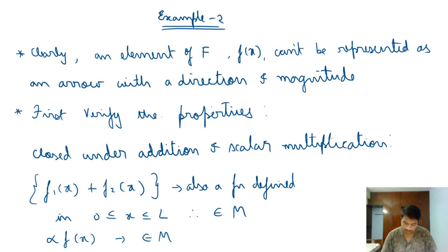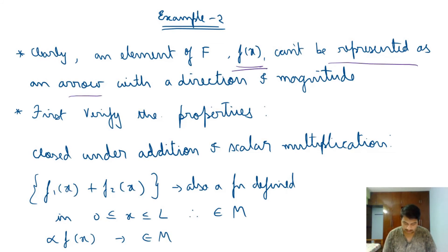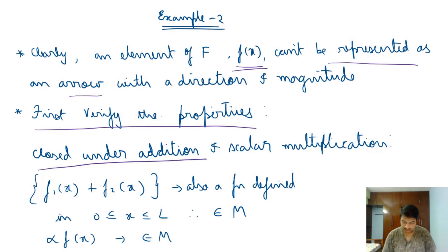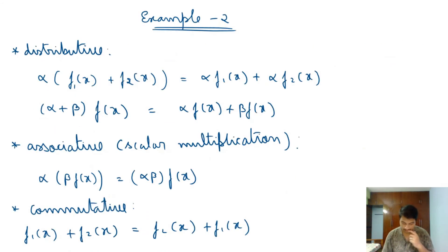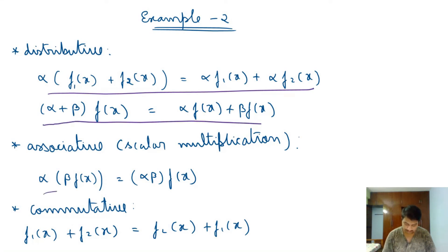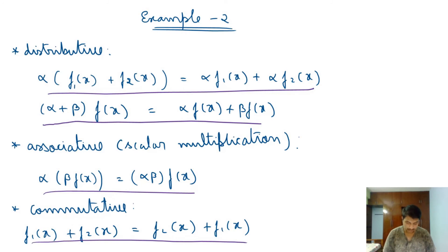Elements f(x) cannot be represented as arrows — it makes no sense to assign a direction and magnitude to a function. So this is another example where vectors are not arrows. Closure under addition and scalar multiplication: adding two functions pointwise gives another function defined on 0 to L, so it belongs to F. Similarly, scalar multiplication stays in F. The distributive and associative properties are also satisfied.